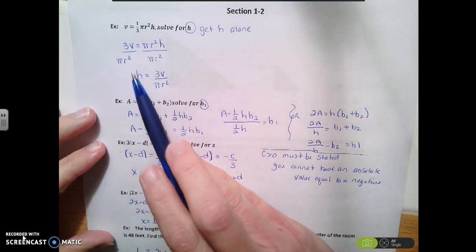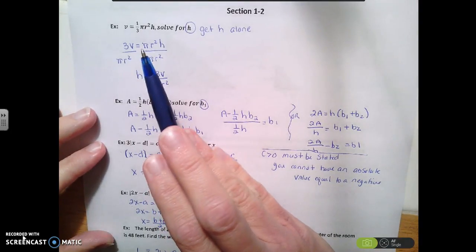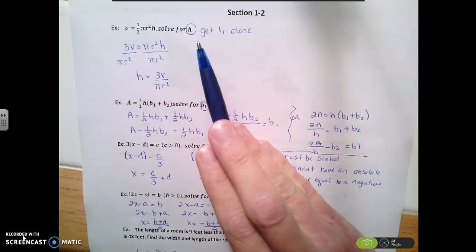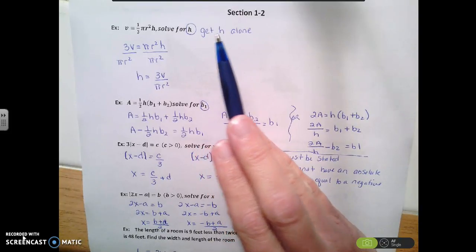So here I have this equation which happens to be the volume of a cylinder, I'm sorry, a cone, and I want to solve for h, meaning I want to get h by itself.